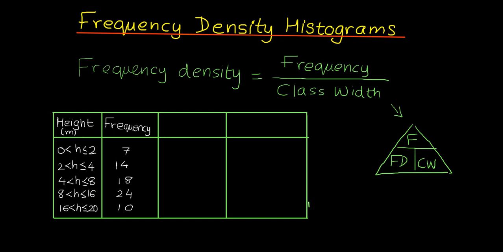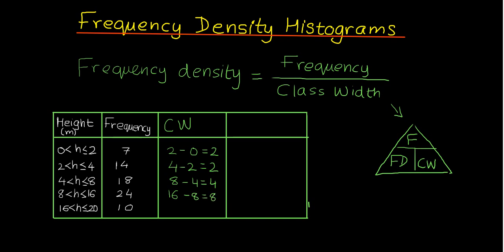We need two extra columns in the table. The first is for class width (CW). We find the difference between the two ends of each class interval: 2 minus 0 is 2, 4 minus 2 is 2, 8 minus 4 is 4, 16 minus 8 is 8, and 20 minus 16 is 4.